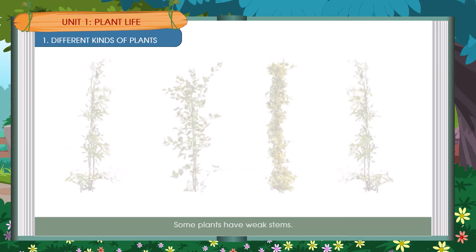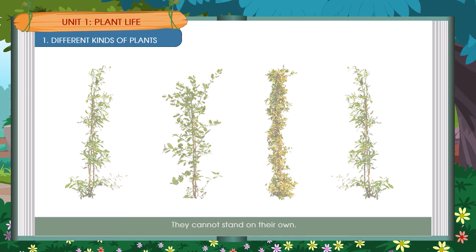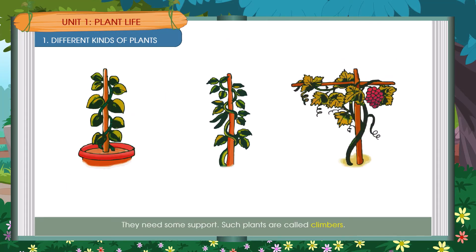Some plants have weak stems. They cannot stand on their own. They need some support. Such plants are called Climbers. A Money Plant, A Bean Plant, A Grapevine.